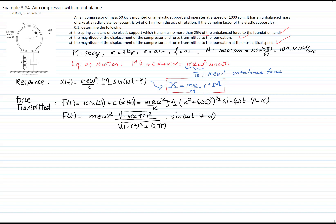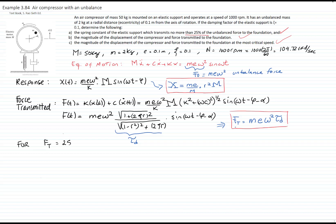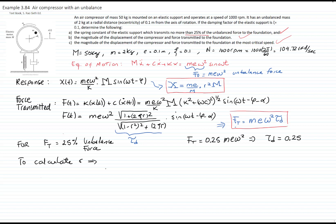The magnitude of the transmitted force equals the unbalanced force times the transmissibility coefficient tau. We want the transmitted force to be 25%, so 0.25 times the unbalanced force. Therefore the transmissibility factor equals 0.25. We know zeta but not R, so we need to determine R. To do so, I set the transmissibility factor equal to 0.25 and square both sides of the equation.